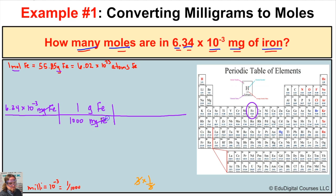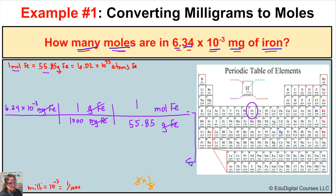But we don't want grams of iron — we want moles of iron. So we cancel out grams of iron by putting it in the denominator and putting moles of iron in the numerator. The relationship from our periodic table is that every one mole of iron is 55.85 grams of iron. Grams of iron in the numerator and denominator cancel out, leaving us with moles of iron as our final unit.